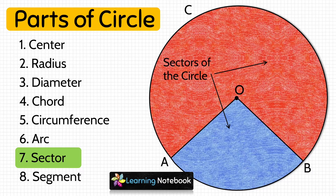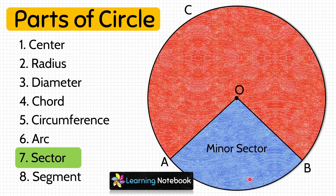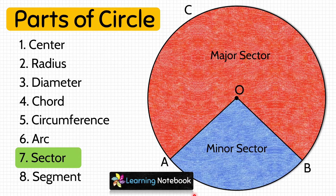The corresponding arcs define whether it is a major sector or a minor sector. Here, AB is the minor arc. Therefore, region OAB — the blue region — is the minor sector. ACB is the major arc, so OBCA — the red region — is the major sector. This is how we differentiate between minor and major sector.